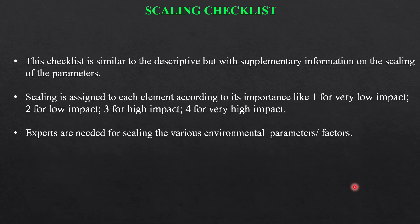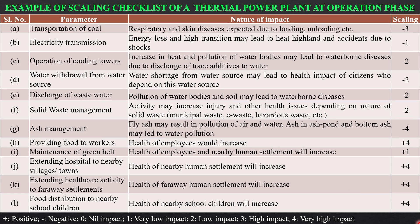The scaling checklist is similar to the descriptive checklist but includes supplementary information on scaling of parameters. A scale is assigned to each element according to its importance — for example, one for low impact, four for high impact — and experts are needed for scaling the various environmental factors. Looking at the thermal power plant example, a negative sign denotes negative impact and a positive sign shows positive impact, with numerical values: one for low, three for high, and four for very high impact.